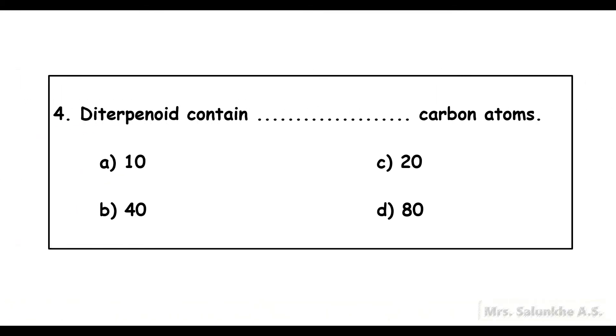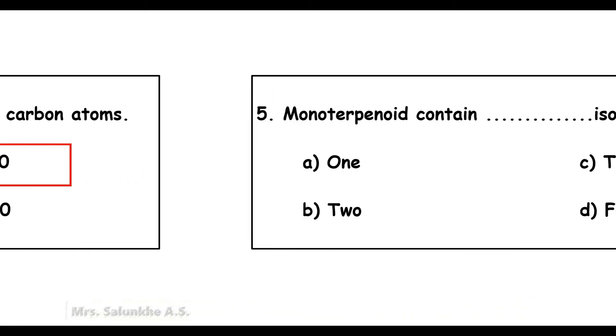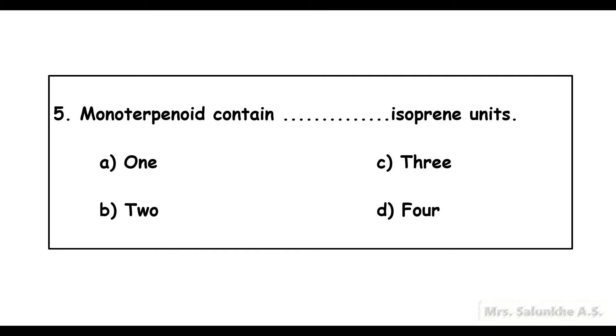Diterpenoid contains 20 carbon atoms. Monoterpenoid contains 2 isoprene units.